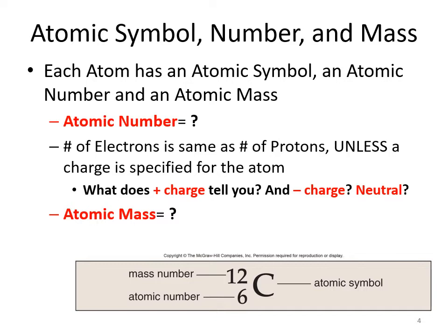Atomic mass is the number of protons plus the number of neutrons. When you are asked to find the number of neutrons of an atom, subtract the atomic number from the atomic mass. In the case of carbon, the atomic mass is 12 and the atomic number is six, so 12 minus 6 gives you six neutrons. If carbon had an atomic mass of 13, you would do 13 minus 6, which would be seven neutrons.